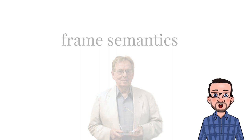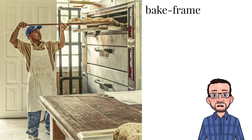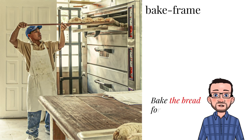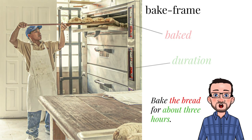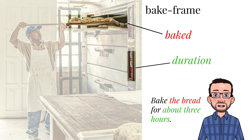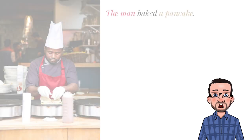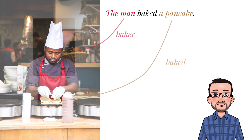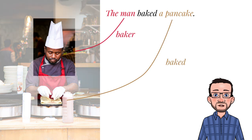So argument realization in Goldberg's approach starts with categorizing an event in the world as a particular semantic frame, and then profiling which parts of the frame we find relevant for communication. If I write in a recipe, bake the bread for about 3 hours, I profile the event as an instruction — I only need to highlight the thing that you need to bake and for which duration. If on the other hand I say the man baked a pancake, I profile both the baker and the food. In construction grammar, none of these different profiles requires you to have a different lexical item in your dictionary. You only need to combine them with different grammatical constructions.